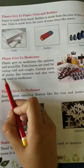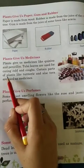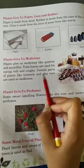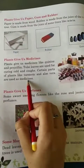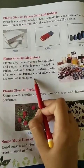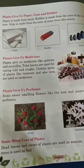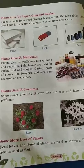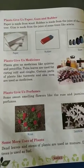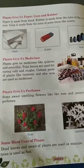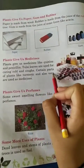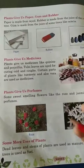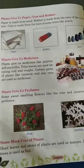Parts of plants like turmeric and aloe vera are used as medicines, and some of them are also used in other ways.